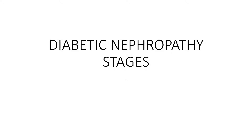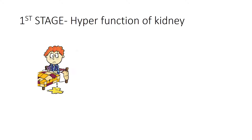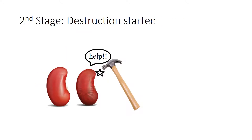The constriction of the efferent arterioles of the glomerulus and subsequent dilation of the afferent arterioles results in increased pressure inside the glomerulus, causing hyperfiltration and hyperfunction, resulting in polyuria in the first stage of diabetic nephropathy.